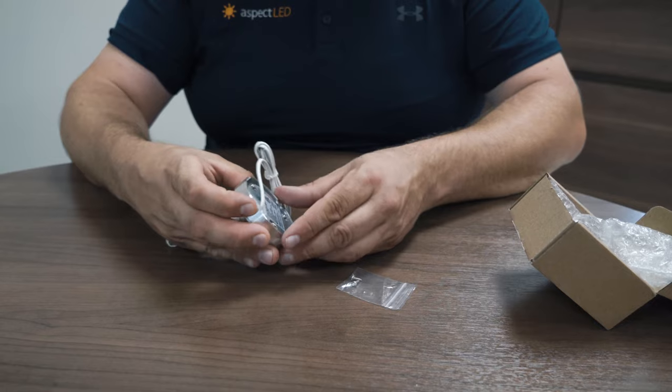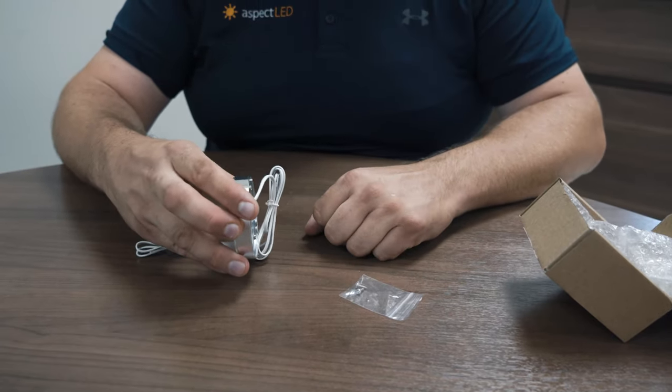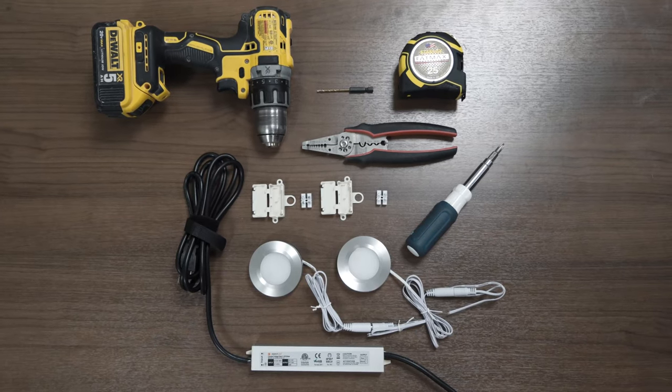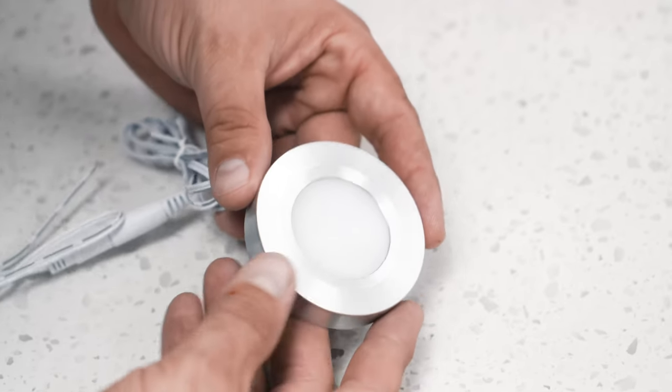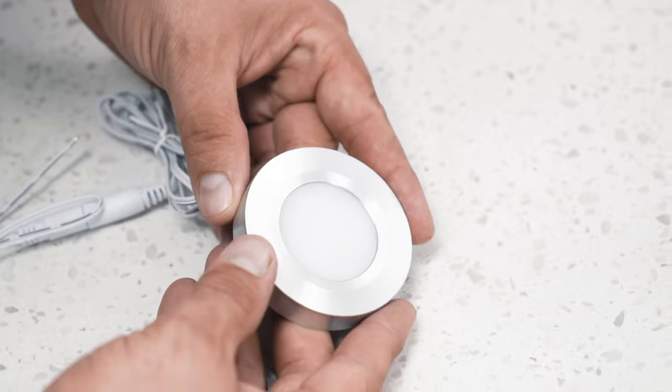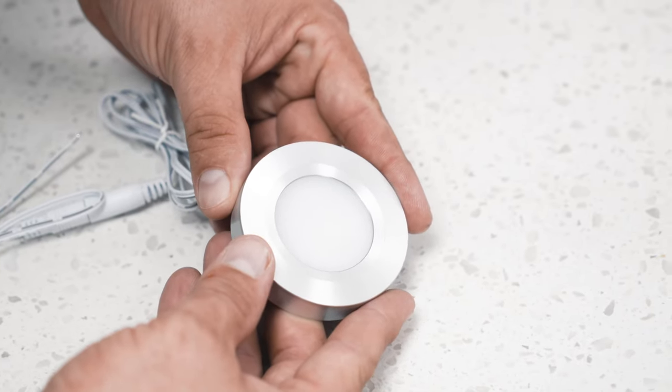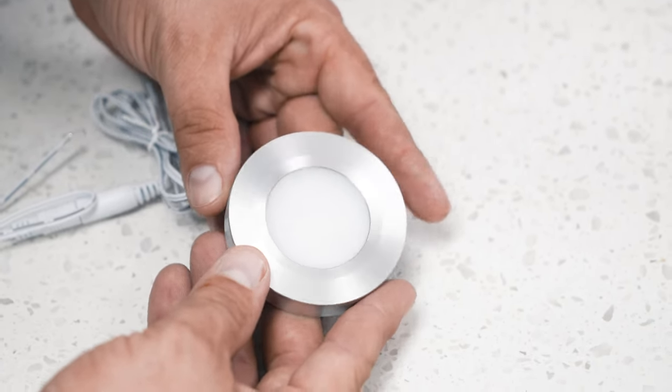The screws will be used on the back side when this is mounted. For the installation today, here is everything that you will need. We also have a list in the description. These puck lights are meant to be surface mounted, meaning you do not have to cut a recessed hole for these, they just mount on the surface.